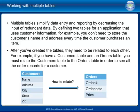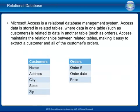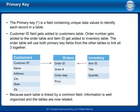After you've created the tables, they need to be related to each other. For example, if you have a customers table and an orders table, you must relate them in order to see all the order records for a customer. Microsoft Access is a relational database management system. Access data is stored in related tables where data in one table, such as customers, is related to data in another table, such as orders.